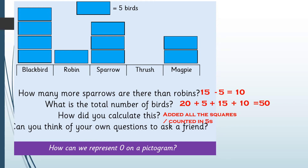Now it's asking you to think up your own questions to ask a friend — for example, how many more blackbirds are there than robins, or how many robins and sparrows are there altogether? I'm sure you can come up with your own questions. Finally, how can we represent zero on a pictogram? We had that yesterday — have a look at the thrush where there is nothing. When we're doing zero on a pictogram, we basically leave it blank.